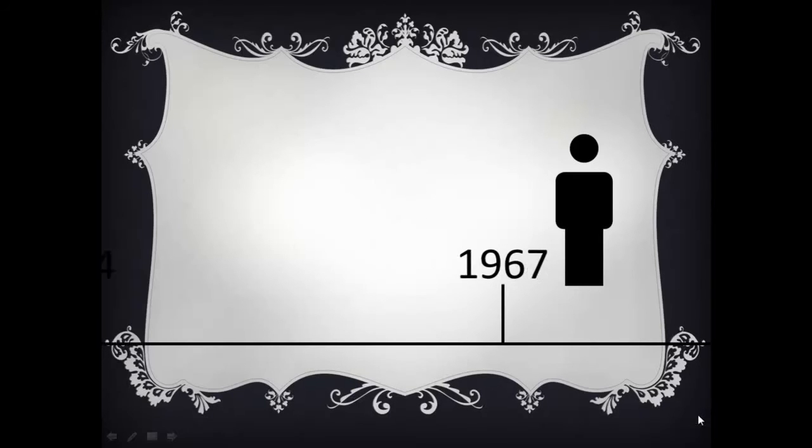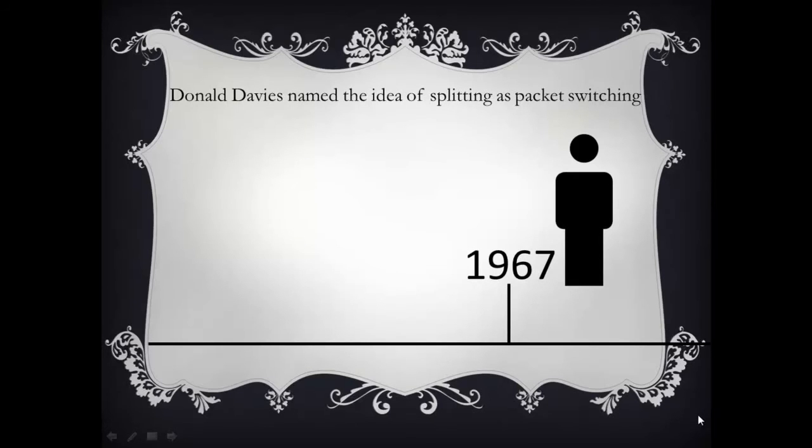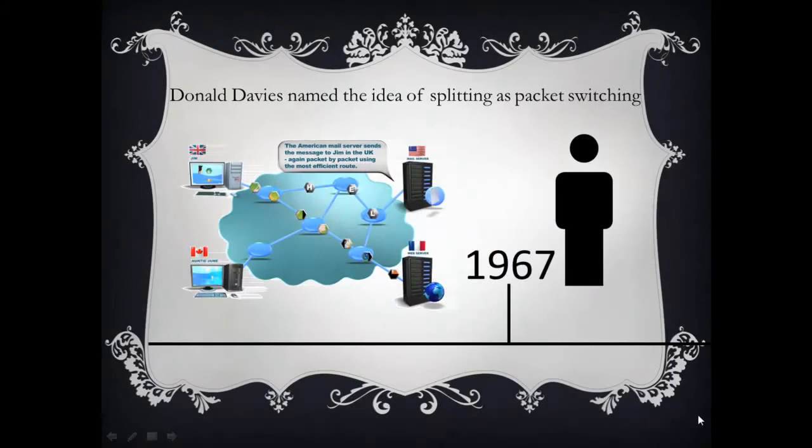In 1967, Donald Davies named the idea of dividing messages as packet switching. ARPANET facilitated the first packet switching between four universities: UCLA, Stanford Research Institute, UC Santa Barbara, and the University of Utah. By this network, four computers were connected.